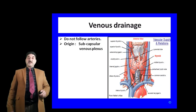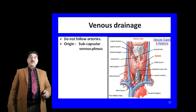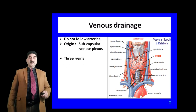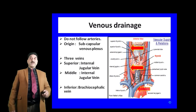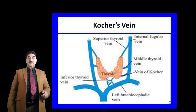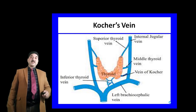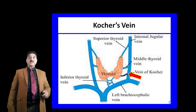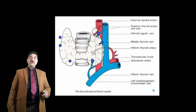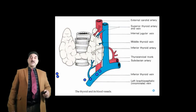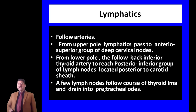Thyroid veins do not follow arteries; they begin from the subcapsular venous plexus. There are usually three veins: superior, middle, and inferior. The superior thyroid vein drains into the internal jugular vein, the middle vein also drains into the internal jugular vein, and the inferior vein drains into the internal jugular vein. Sometimes a fourth vein is present, emerging between the middle and inferior thyroid veins and draining into the internal jugular vein; this vein is important surgically.